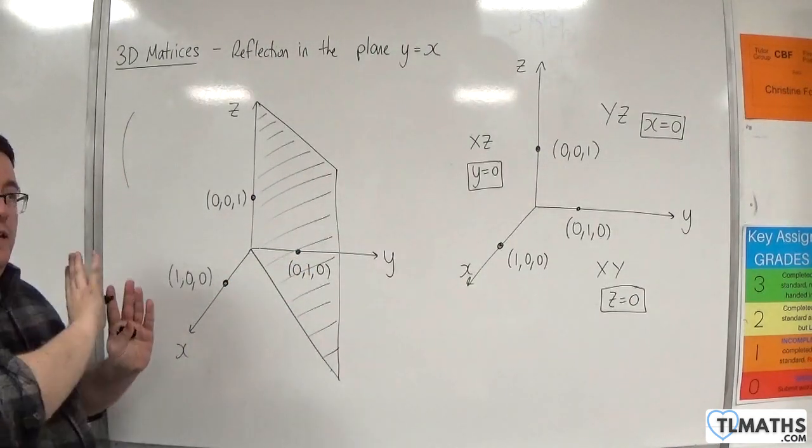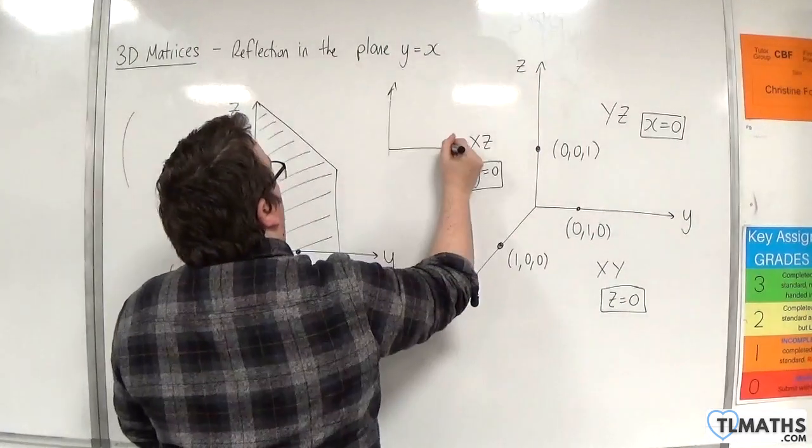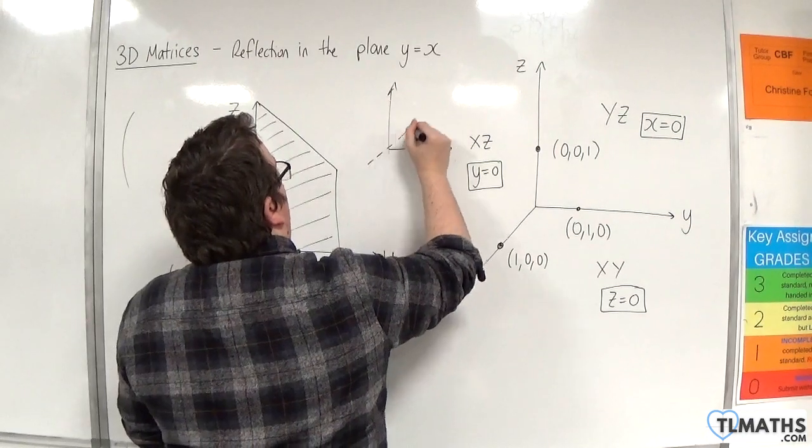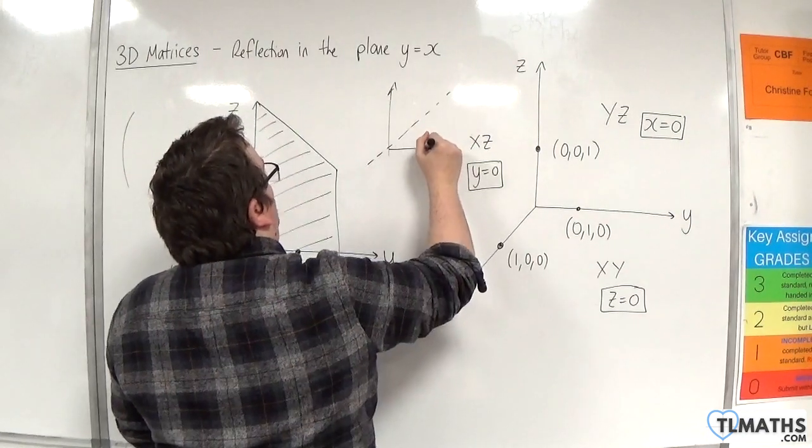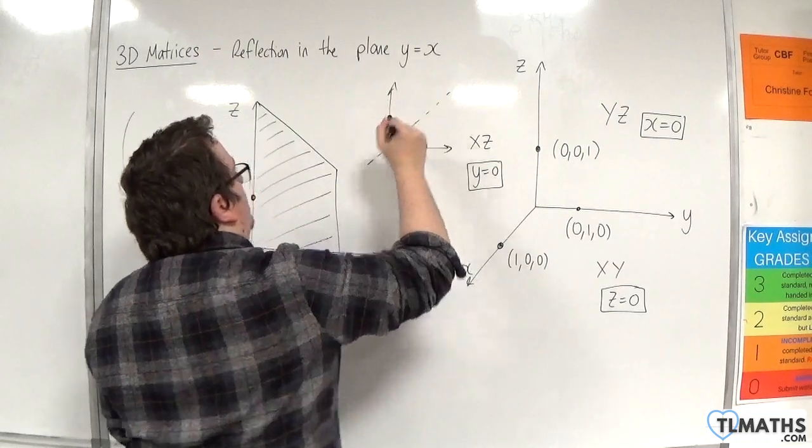Because just like if you reflected in the line y equals x, so if we were looking at two dimensions, and here is my reflection line, then this point will reflect here. Okay, that's what's going to happen.